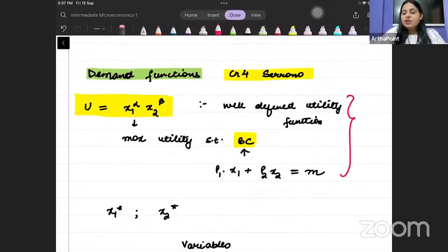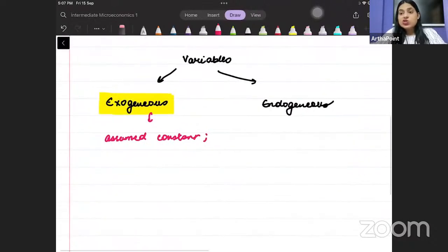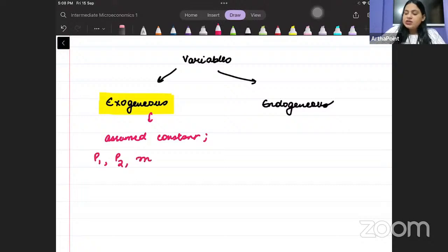But what I can decide will be the demand of the two goods. That is under my control, that I will demand how much of good one and good two. But what is outside my control, that is going to be the price of the goods and the income. Okay, that is always assumed to be given. So Beta, what is exogenous? P1, P2, and M. These are assumed to be exogenous.